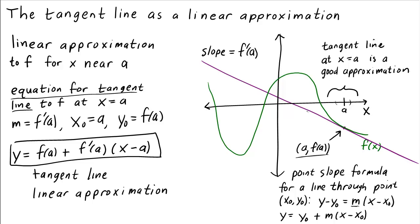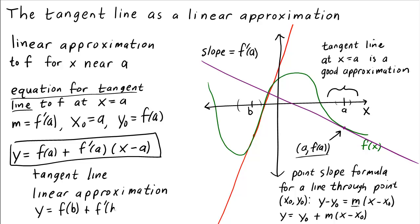This tangent line, or linear approximation for f, is valid only near x equals a. If we wanted to understand the behavior of f at a point far away from a — let's say over here, we'll call it b — then the linear approximation at a is no good. But a function has many linear approximations. We could also calculate a different linear approximation for f around the point b: y equals f of b plus f prime of b times x minus b. The same formula, only with b instead of a.